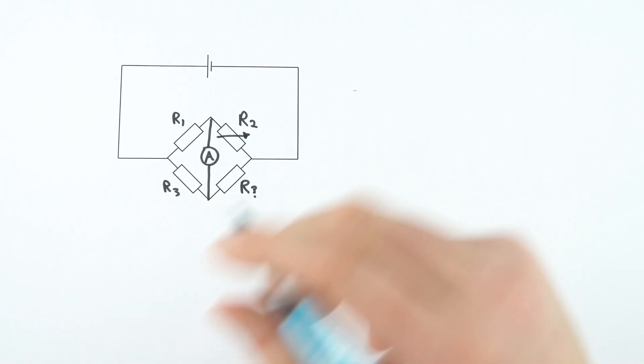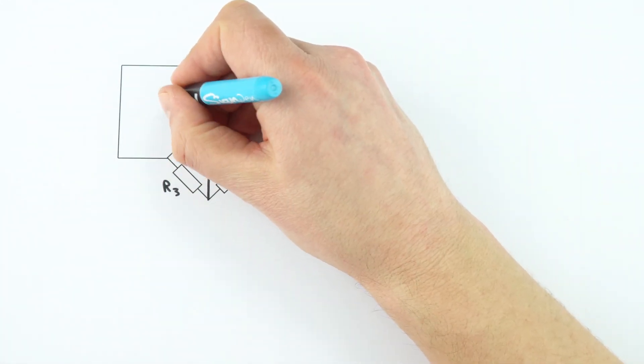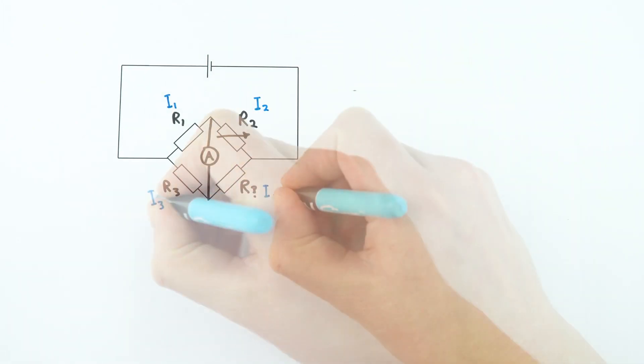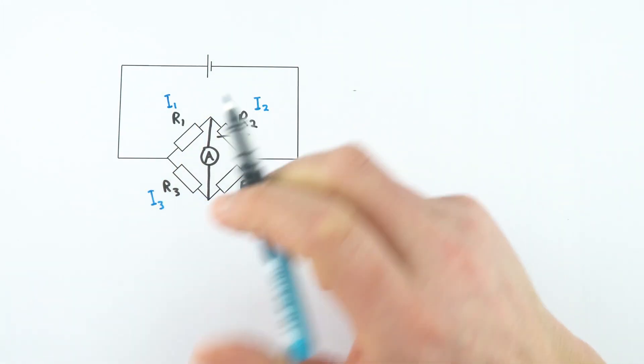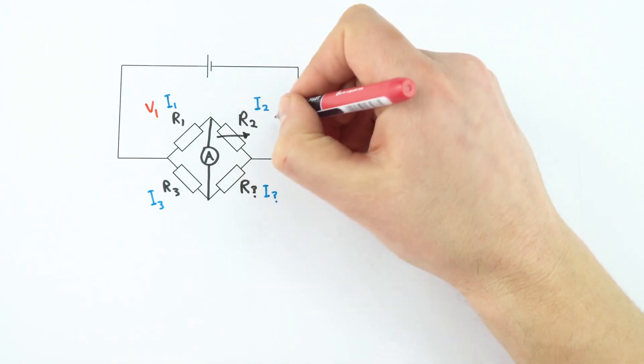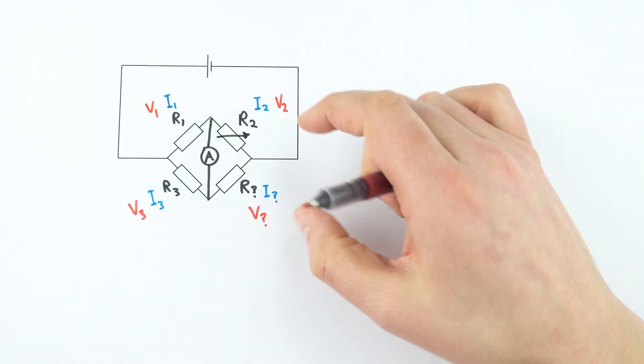Now, other things that we might know about this is that we want to think about the current in resistor 1, which I'm going to call I1. We'll have a current in I2, and finally we'll have a current in that resistor. And across each of these components, they'll have their own potential difference. So I'm going to call this one V1, V2, V3, and our unknown V as well. So that's some data that we need.